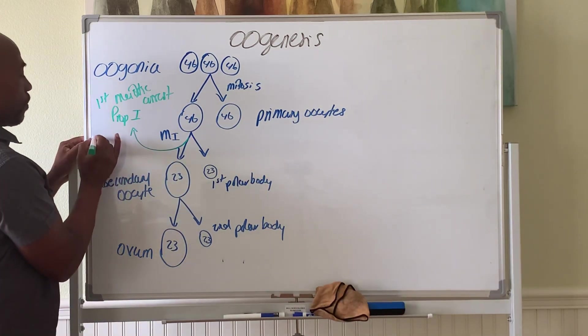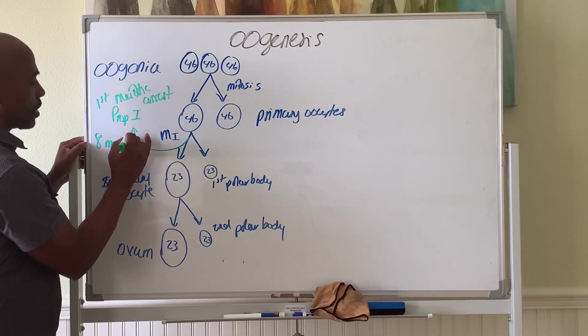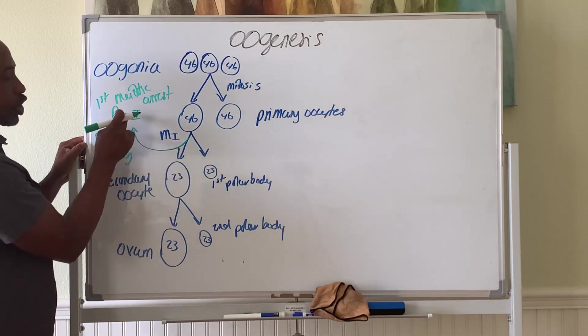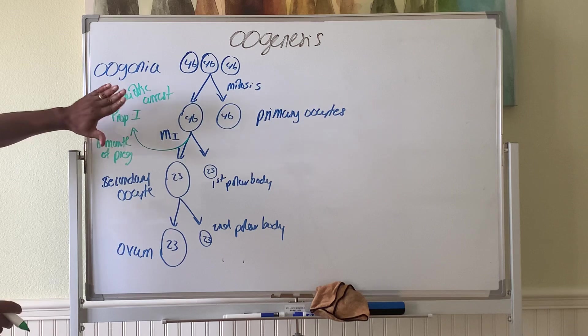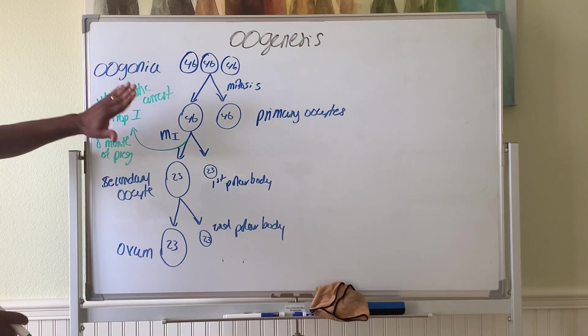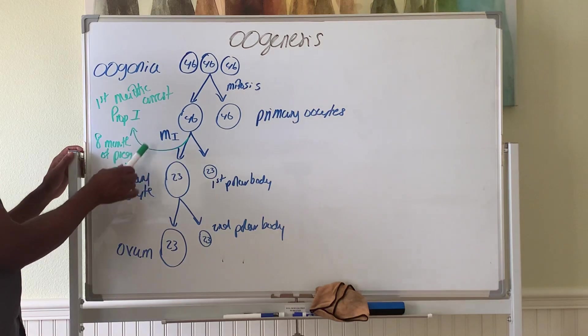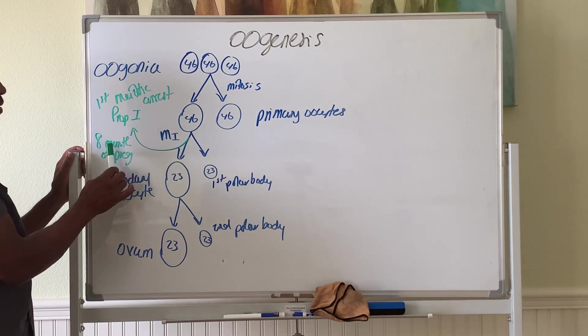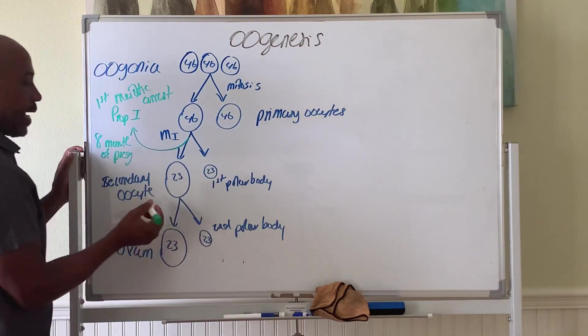This happens probably around eight months of pregnancy or so. This process stops. And they all will rest there, and stay there until birth and until puberty. So, then, you're born with all of the oocytes arrested in prophase one of meiosis one, as primary oocytes.